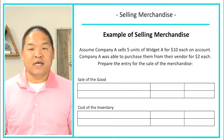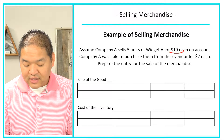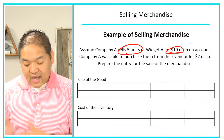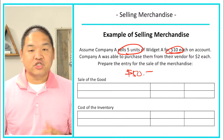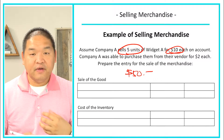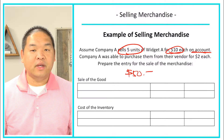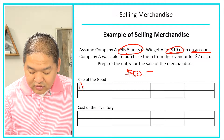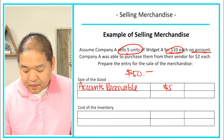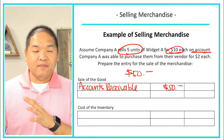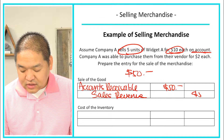We have two entries: the sale and the cost of goods sold. For the sale, we sold it for $10 each and sold five units — 10 times 5 equals $50 worth of product. Since the sale was on account, we didn't receive cash, we received an IOU. So we debit accounts receivable for $50, and we credit sales revenue for $50 because we earned it from making a sale.